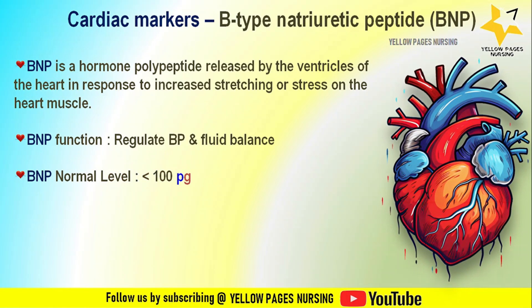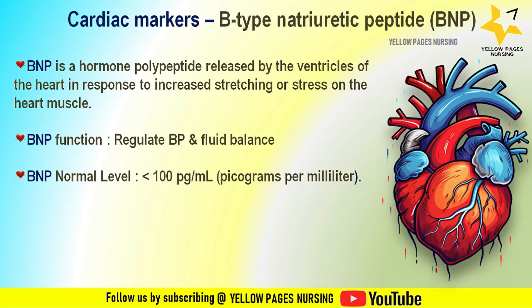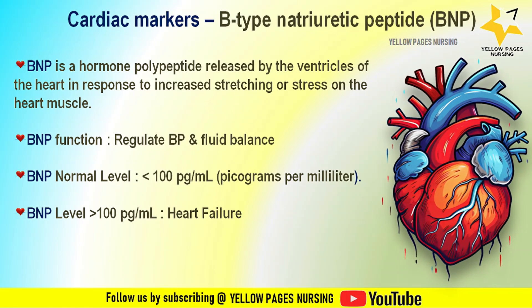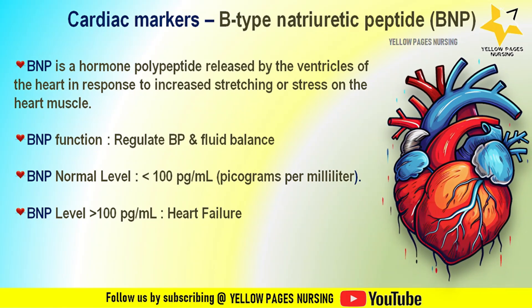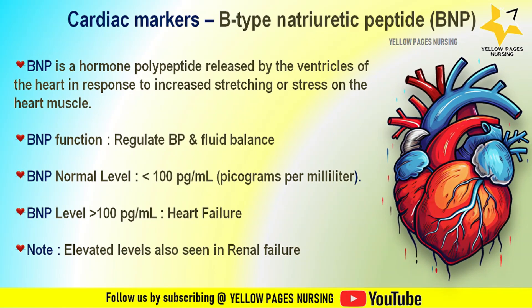Normal BNP level is less than 100 picograms per milliliter. Quick diagnosis of heart failure in patients presenting with dyspnea is important to begin appropriate treatment early. When BNP level is greater than 100 picograms per milliliter, it is abnormal — the higher the number, the more likely heart failure is present and the more severe it is. Notably, elevated BNP is also seen in renal failure whether or not heart failure is present. Similarly, higher NT-proBNP levels are generally indicative of more severe heart failure.